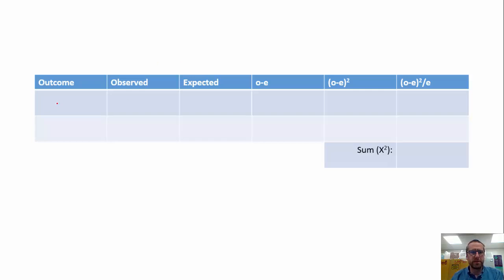So because on the AP exam, you're only going to be able to use a four-function calculator, getting in the habit of laying things out in this kind of table would be very helpful. So we have two outcomes. We have heads and we have tails, and we had 16 observed heads, 10 observed tails. Our expected is 13 and 13. So we're just going to do some subtraction here.